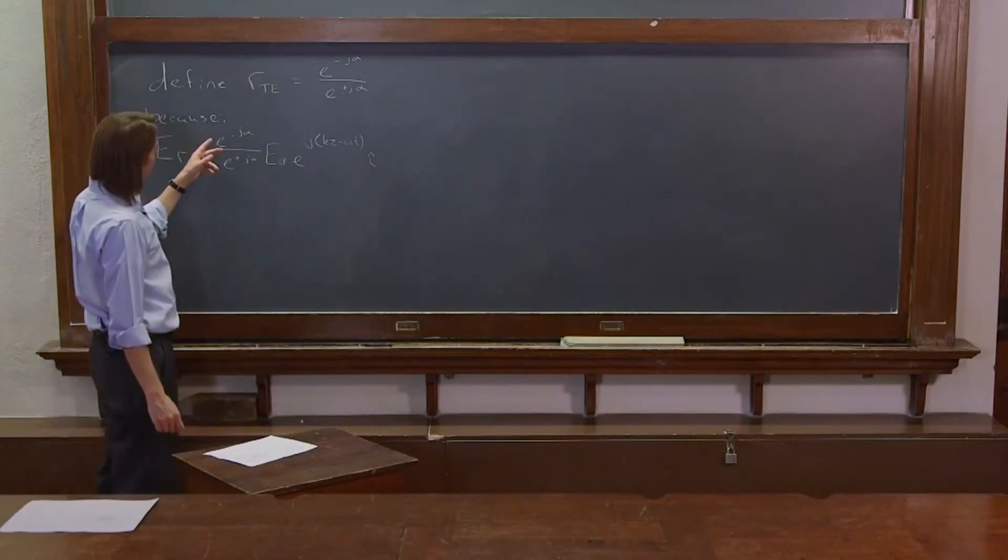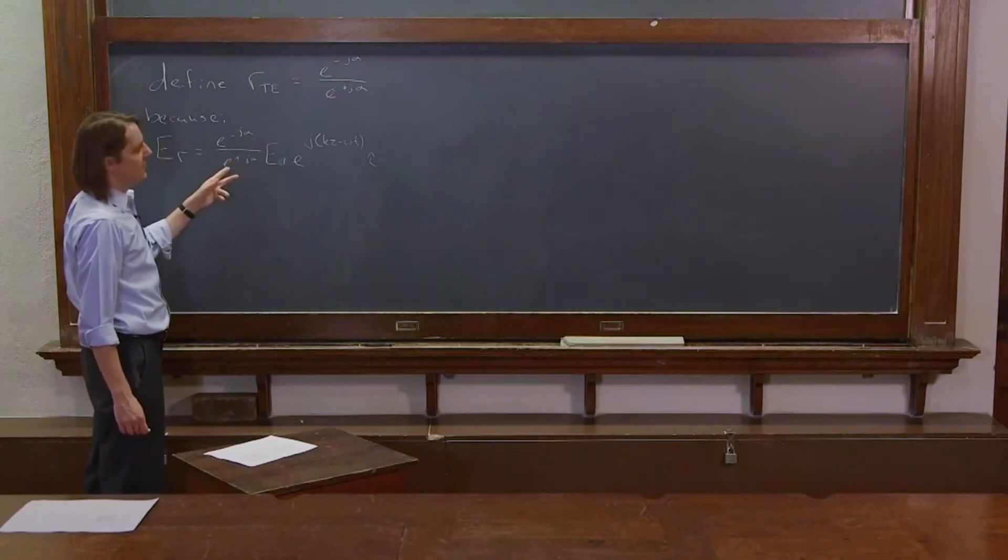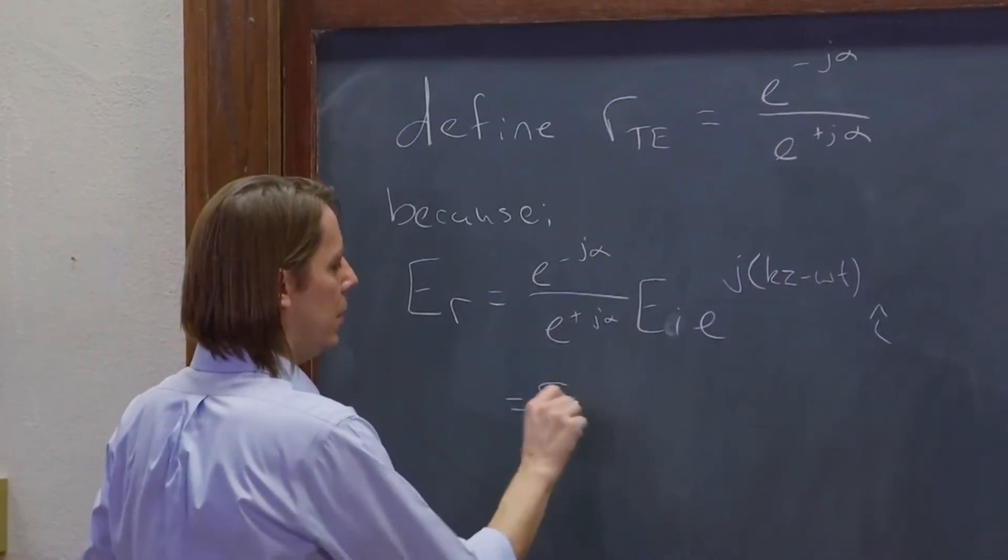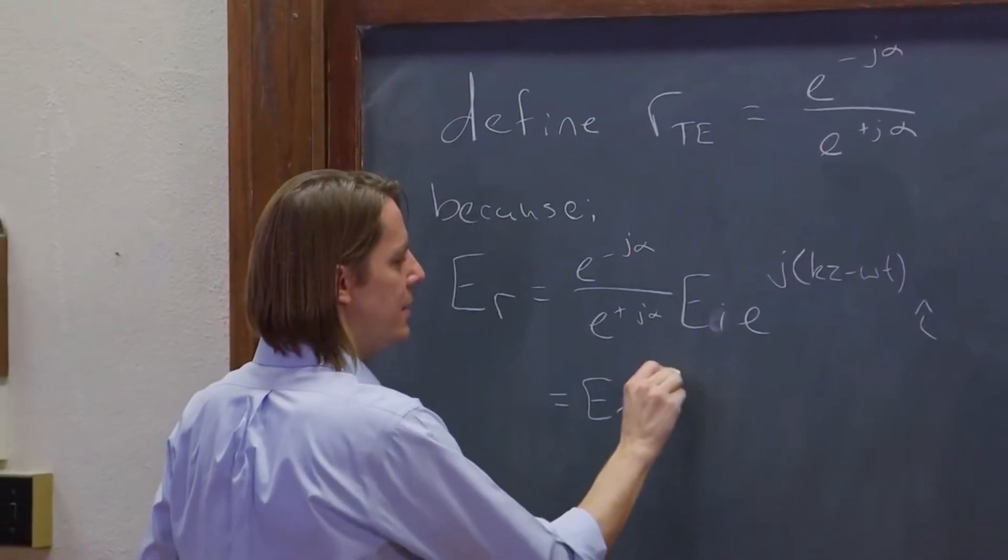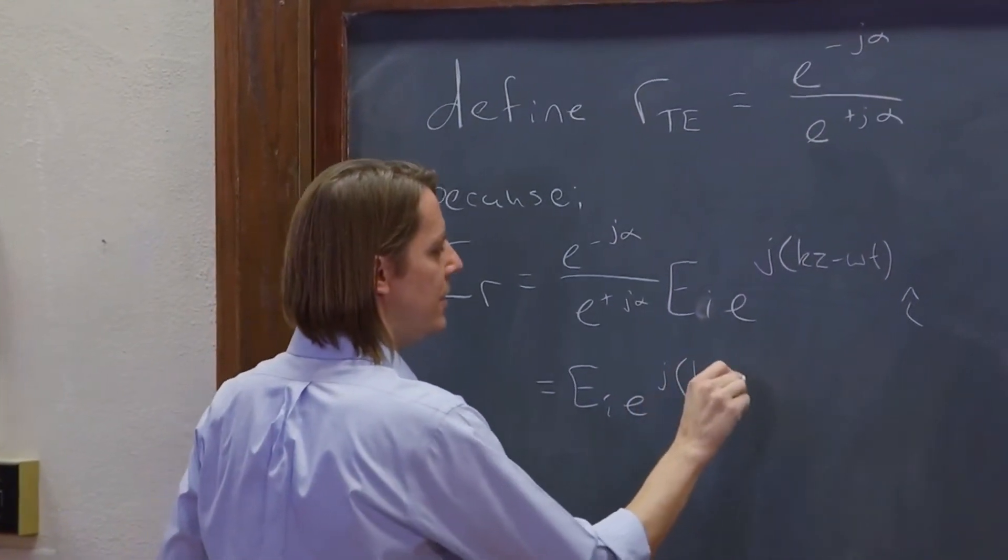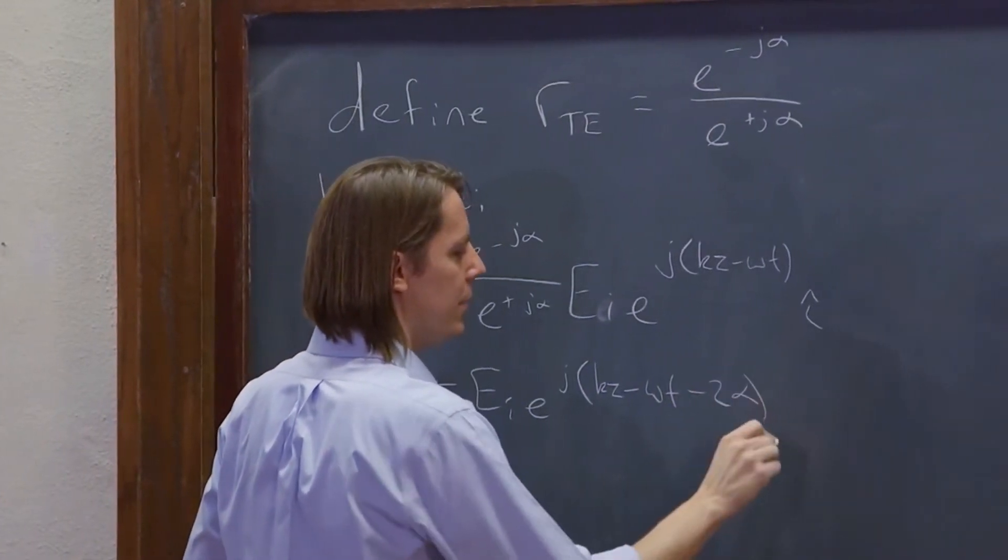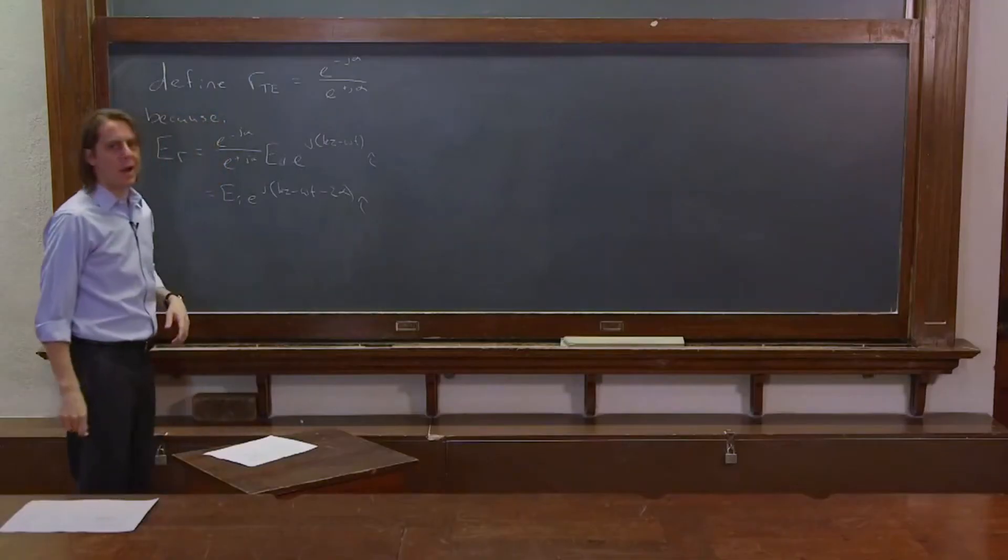So this is e to the minus j alpha divided by e to the j alpha, which is e to the minus 2j alpha, and we can stick it in there. So it's Ei e to the j kz minus omega t minus 2 alpha i hat.